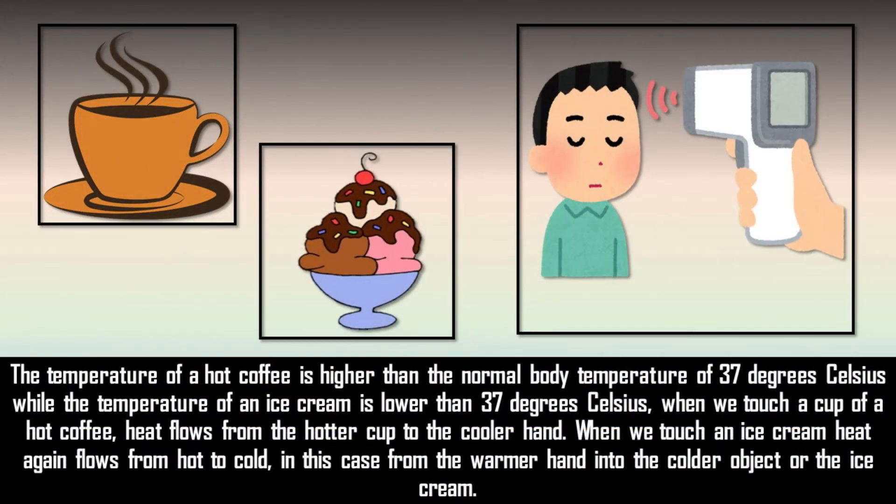It is because the temperature of a hot coffee is higher than the normal body temperature of 37 degrees Celsius, while the temperature of an ice cream is lower than 37 degrees Celsius. When we touch a cup of hot coffee, heat flows from the hotter cup to the cooler hand, and when we touch an ice cream, heat again flows from hot to cold, in this case, from the warmer hand into the cooler object or the ice cream.